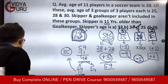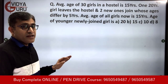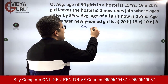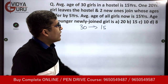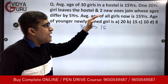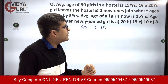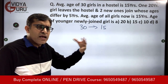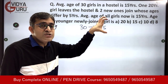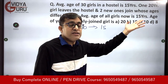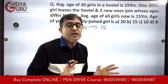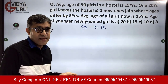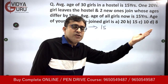Last question for today. Average age of 30 girls in a hostel is 15 years. One girl aged 20 years leaves the hostel and two new ones join. The ages of the two new girls differ by 5 years. The average age of all girls is again 15 after the change. We have to find out the age of the younger newly joined girl.